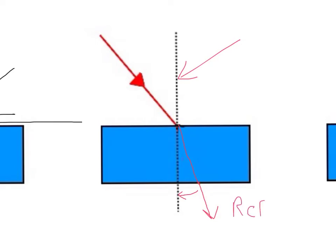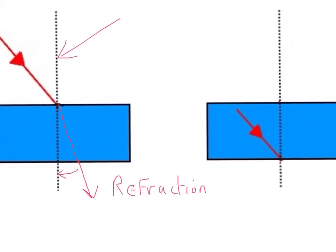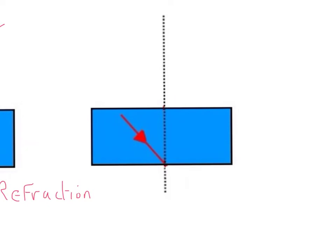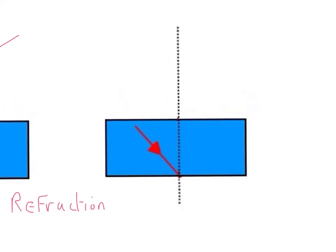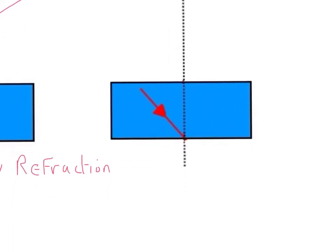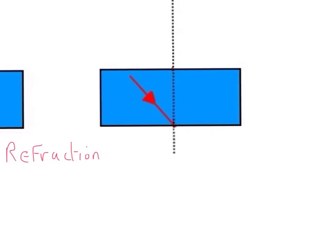It is spelled like this. So what happens to the light that is refracted through the glass once it leaves again? This time, the light, as it leaves, speeds up again. This causes it to refract away from the normal. So you can see the angle away from the normal line has increased as the light ray leaves the glass block.